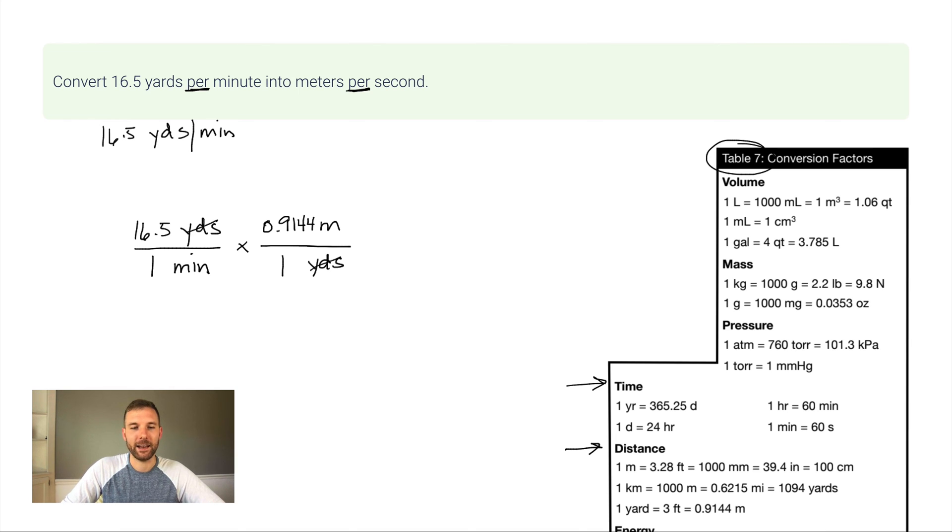Now, here's something we haven't seen yet. What happens if what you want to convert is on the bottom of the fraction? Well, on your conversion factor, you're just going to put minutes up on top. That still cancels it out because look, on the bottom, on the top, gone. So I'm going from minutes to seconds. Let's see. One minute is 60 seconds. We probably know that right off the top of our heads. And so now look, everything's canceled out except for the units that I want. Meters per second.